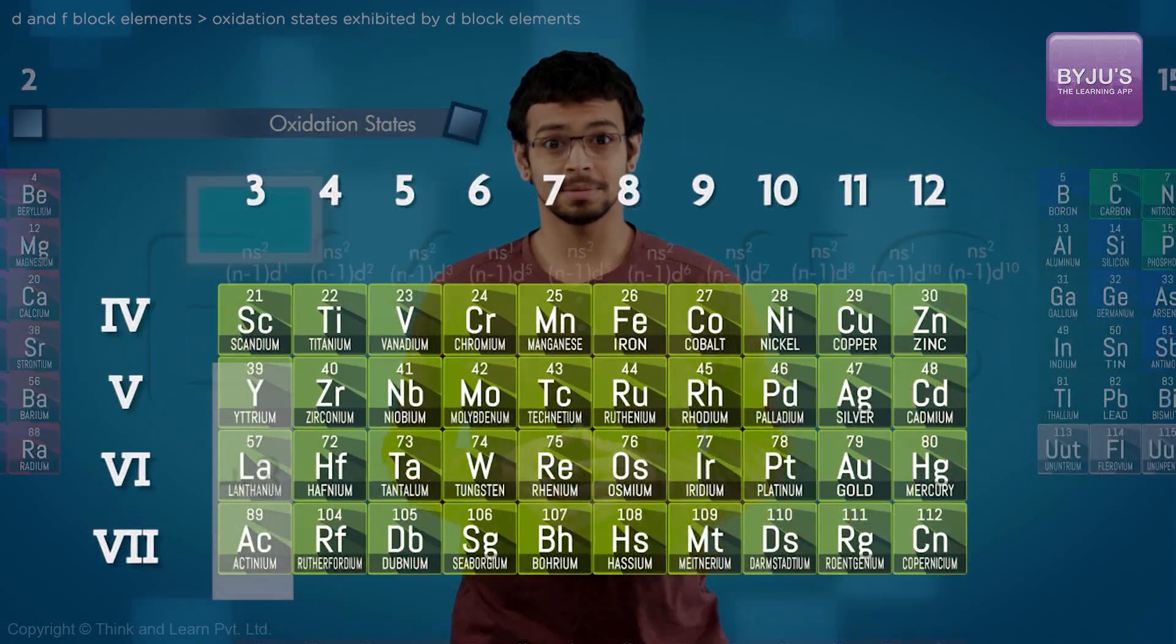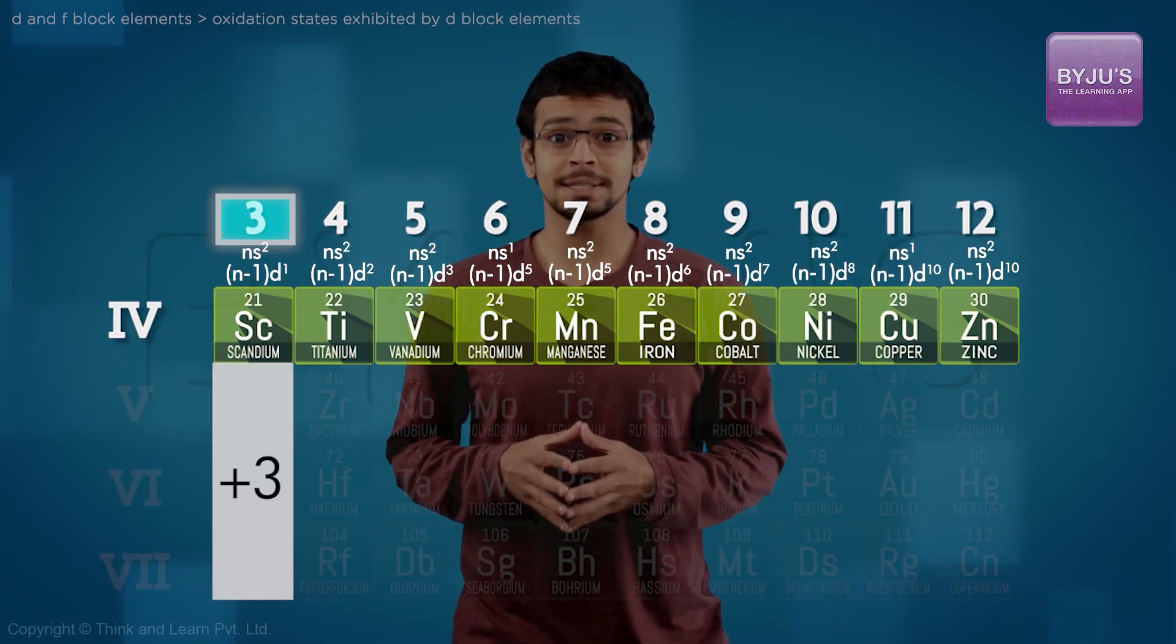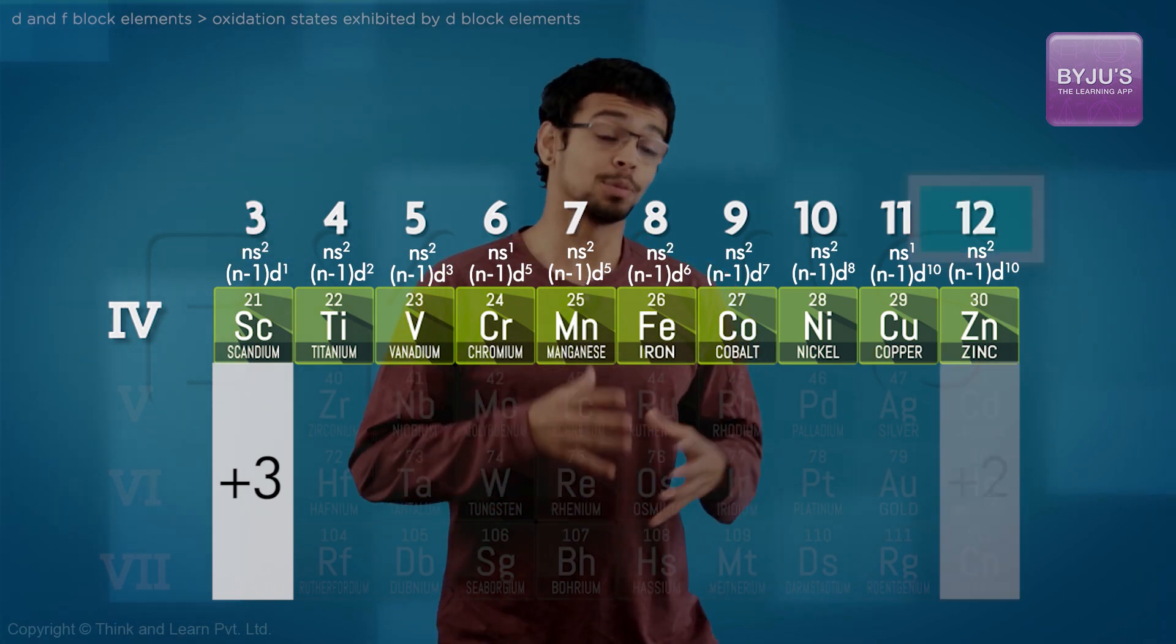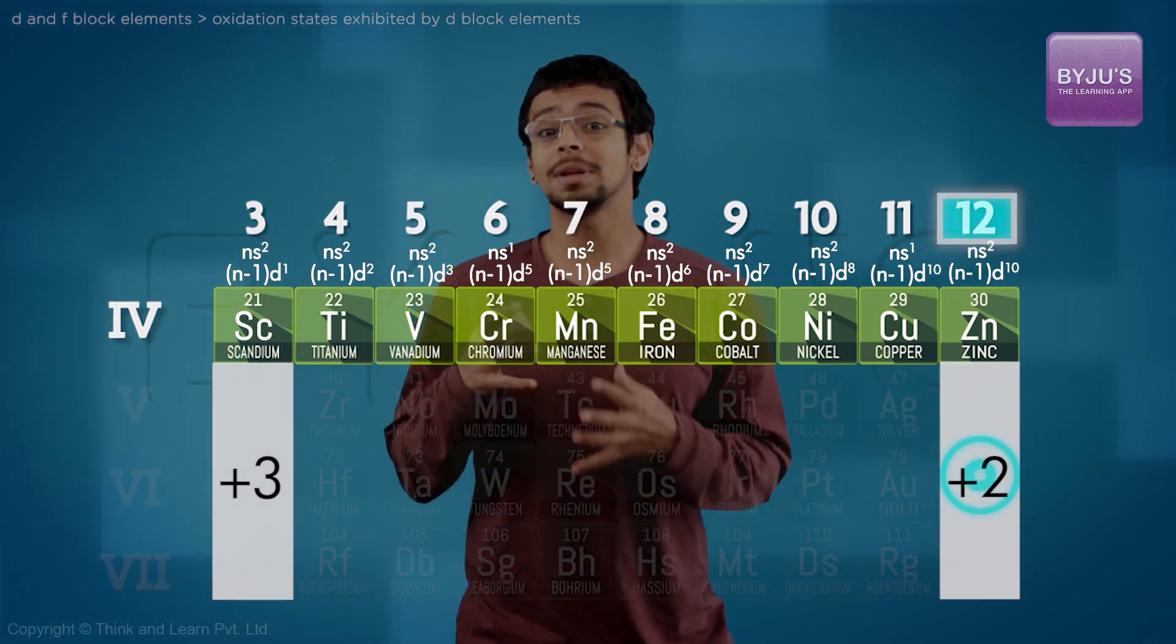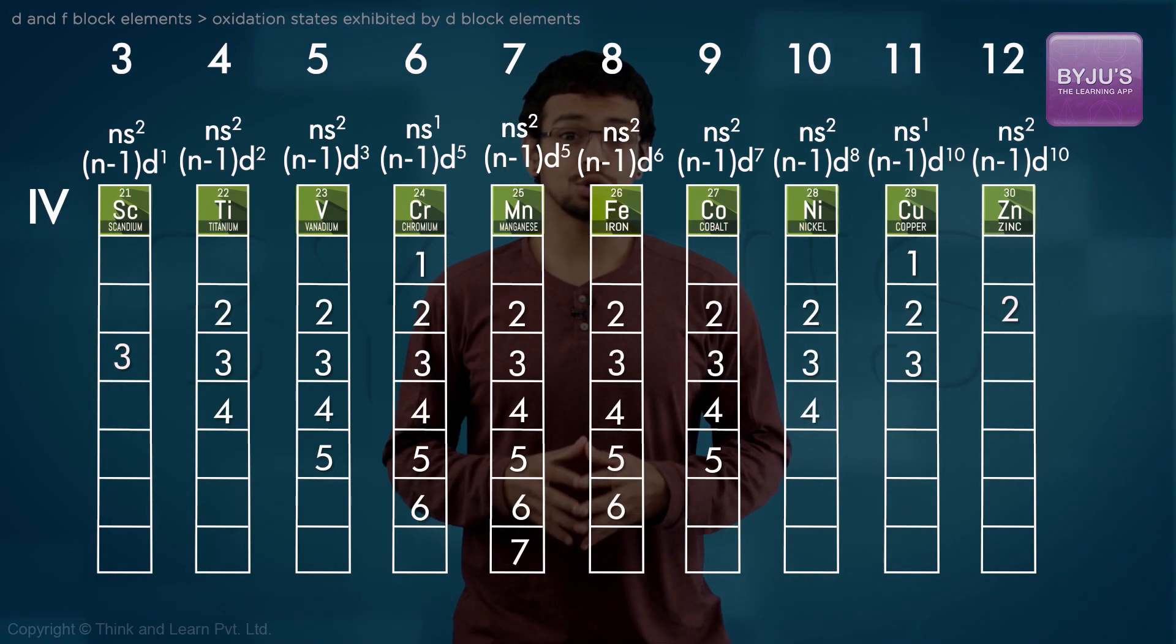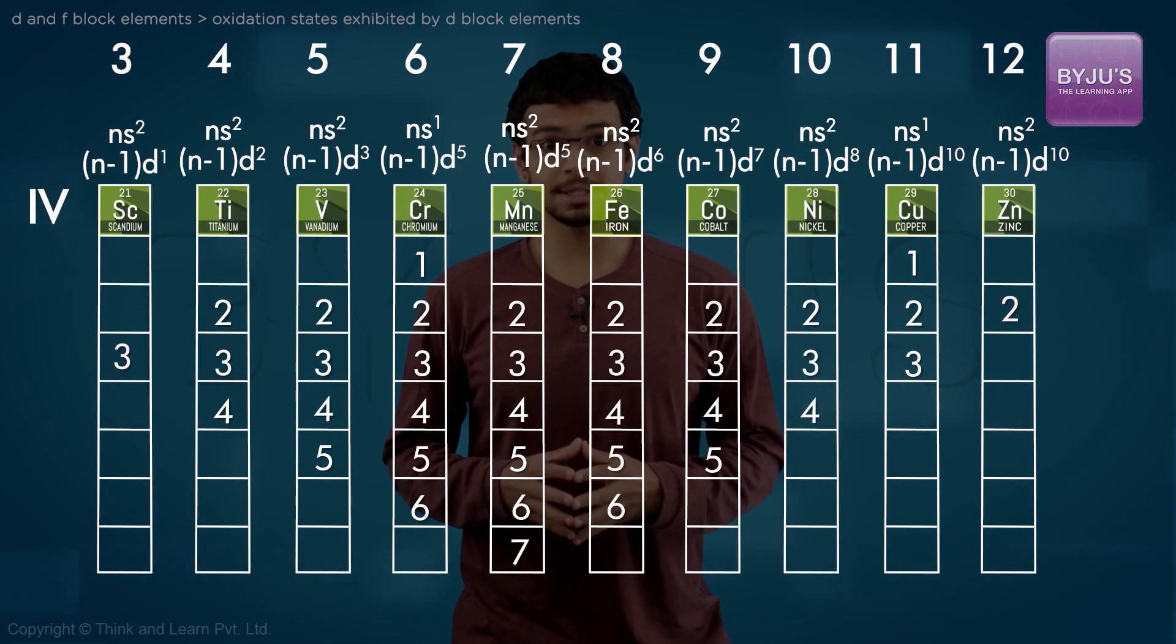The group 3 elements, the start of the transition series, predominantly exhibit the plus 3 oxidation number, and group 12, like we saw, exhibit the plus 2 oxidation state. All other transition elements show great variety of oxidation states.